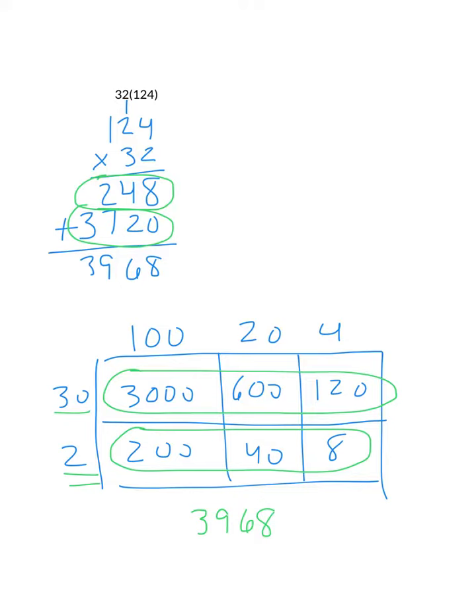The difference is, in the area model, you're showing each individual step so you can help recognize if you make a computational error and fix it, to where in the algorithm you're letting each step piggyback the previous step so you keep moving yourself over based on place value.